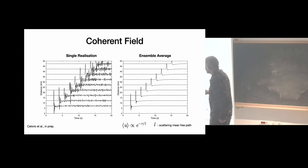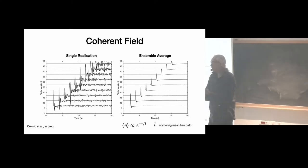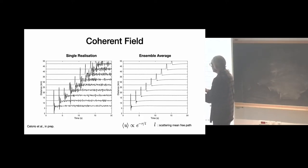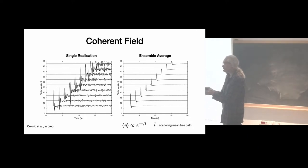This shows an example of the wave field from a single simulation: distance on one axis, time on the other. You have the ballistic arrivals and then the coda. Very close to the ballistic wave there is a mixture of the incident and scattered waves. By ensemble averaging you extract the coherent part of the wave field, whose amplitude decays with distance exponentially. This exponential decay has a characteristic scale called the scattering mean free path.